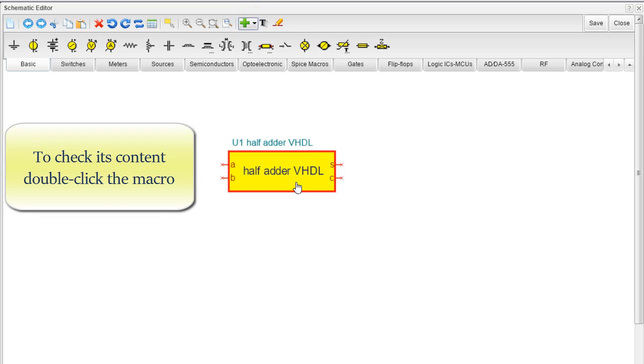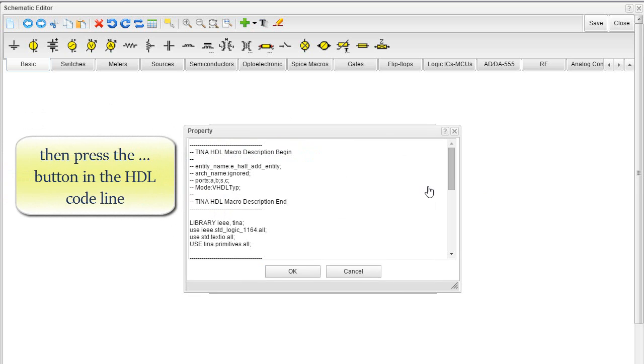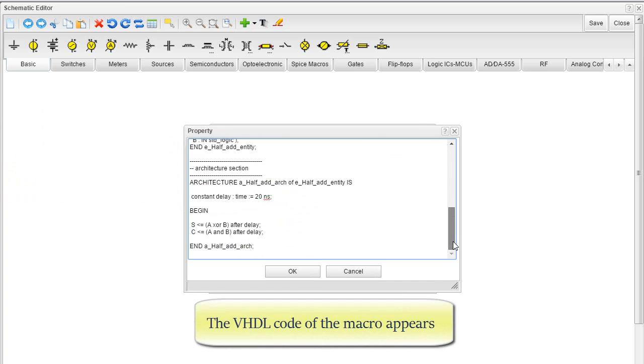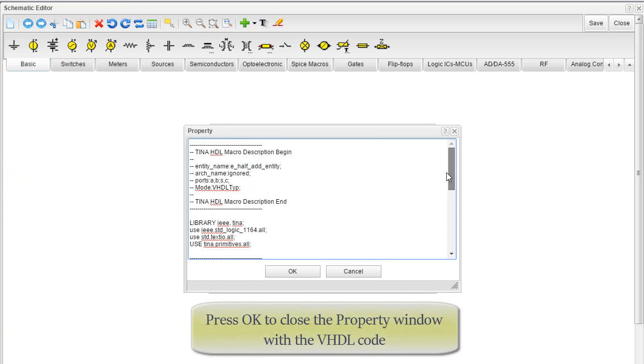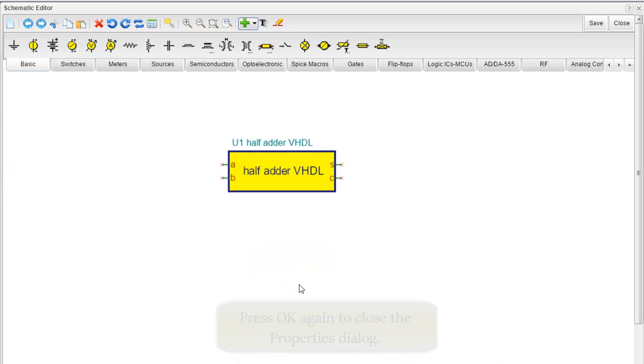To check its content, double-click the macro, then press the three dots button in the HDL code line. The VHDL code of the macro appears. Press OK to close the property window with the VHDL code. Press OK again to close the properties dialog.